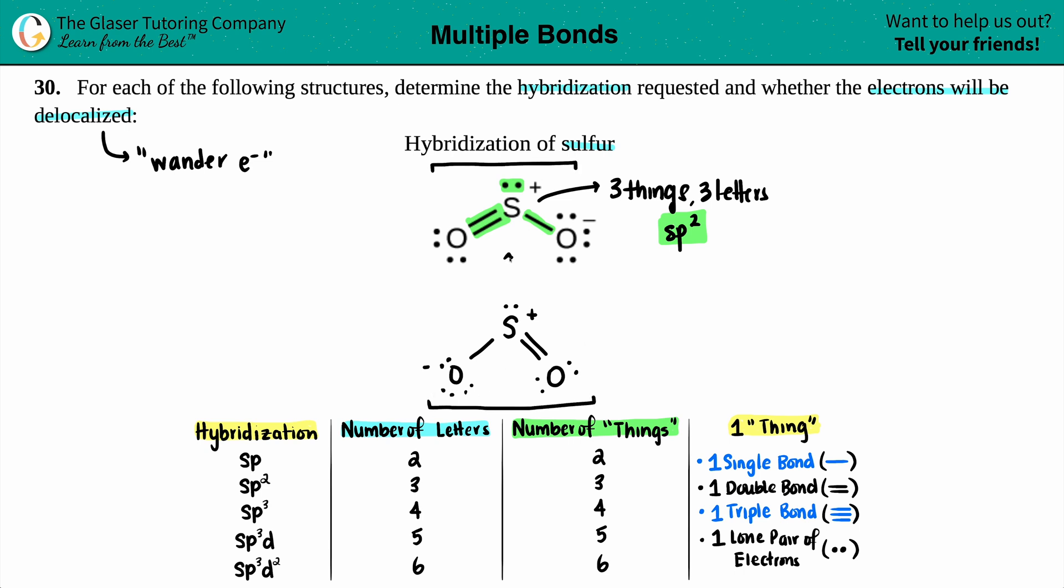Resonance structures are just different ways of drawing the same exact molecule. And if you have resonance structures, you have delocalized electrons. And that's what we're talking about here: the double bond could have been on the left with that oxygen, but the double bond could have been on the right. And they kind of like wander—they're not localized, they're delocalized. So these would have delocalized electrons, and that answers the second part.